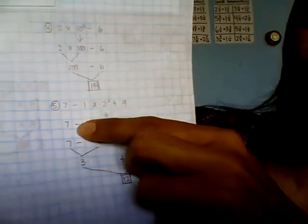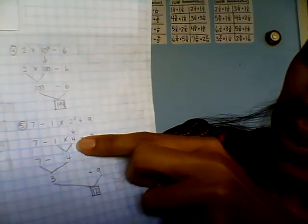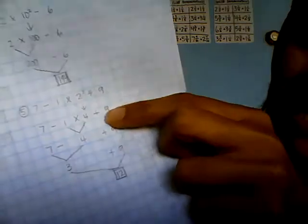That 7 comes down, the minus comes down. When you use a graphing notebook you can make it nice and neat. That 1 comes down, the 2² becomes a 4, and then + 9.